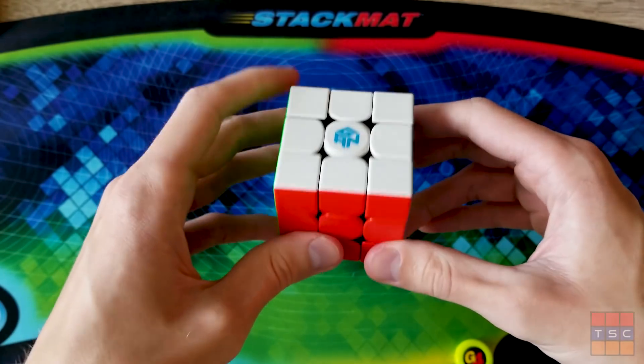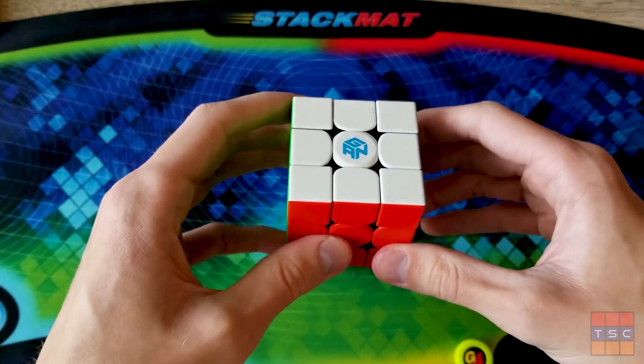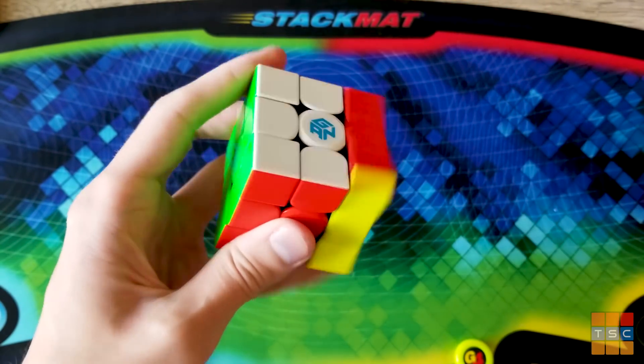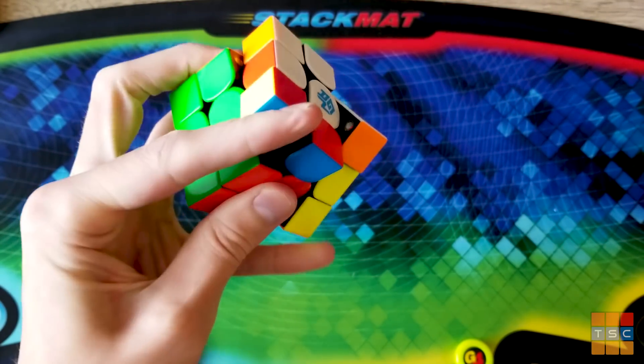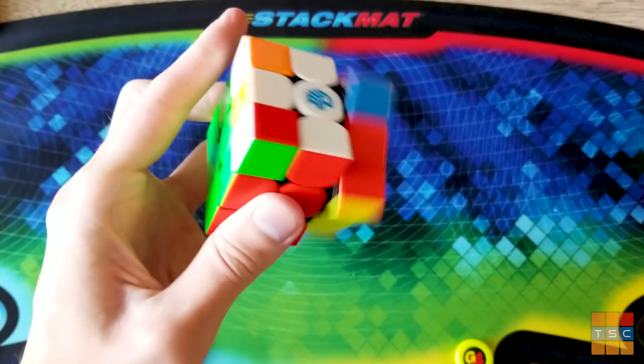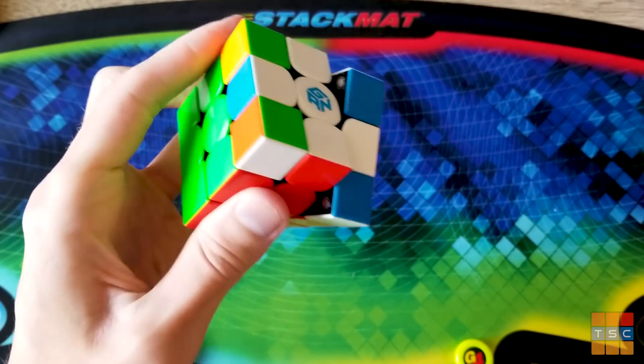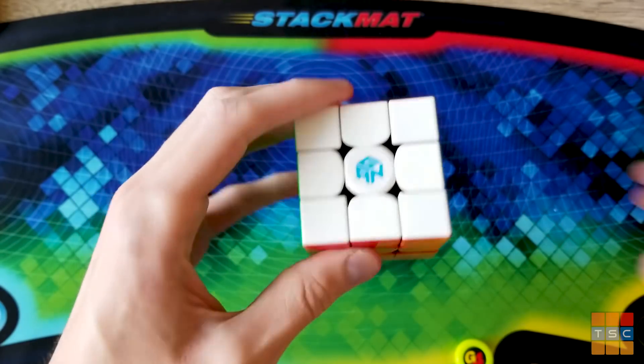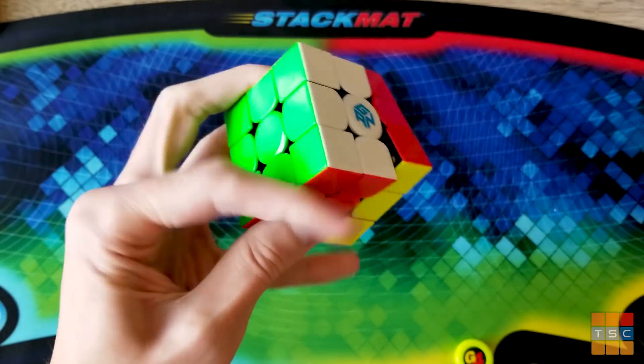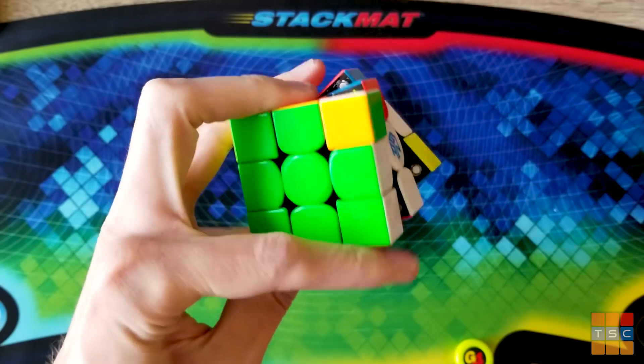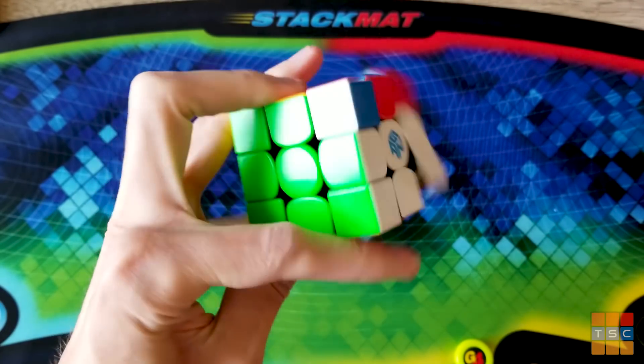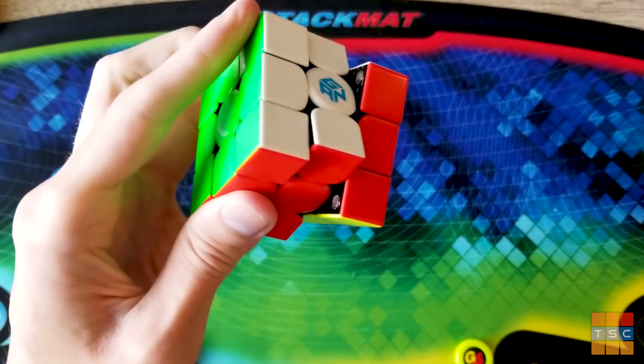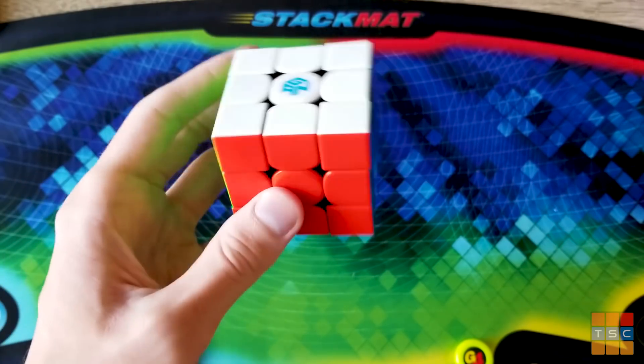Now this cube is gonna be really popular for one-handed because of its smaller size. So let's go ahead and try some one-handed algorithms. It's really loose. It's not too bad, but it's just way too loose. I can't seem to control it. You can see how it's overshooting even just the simplest of turns.